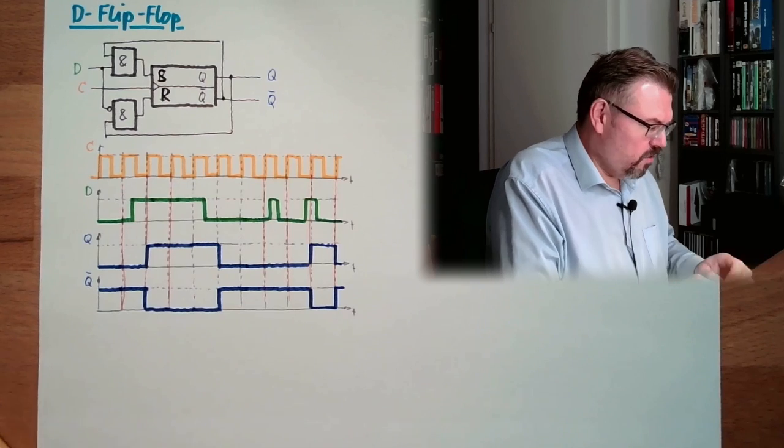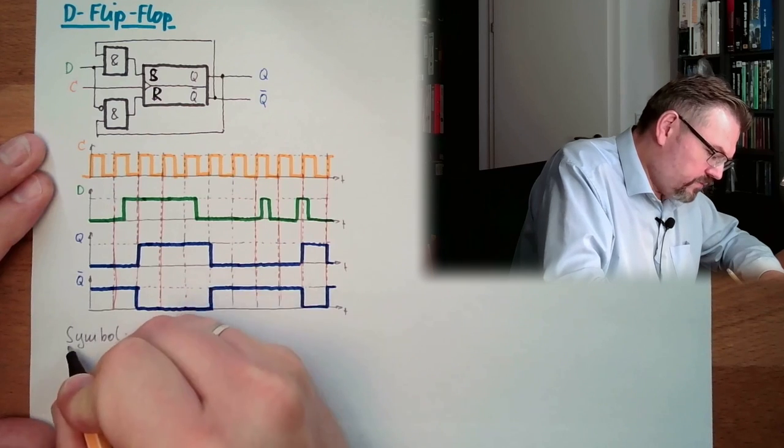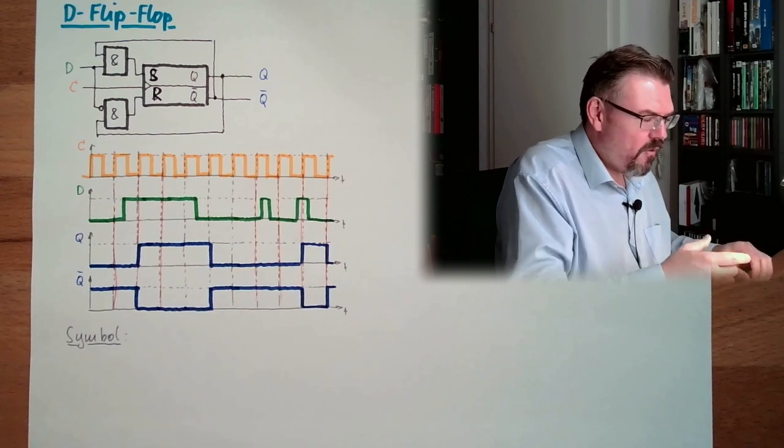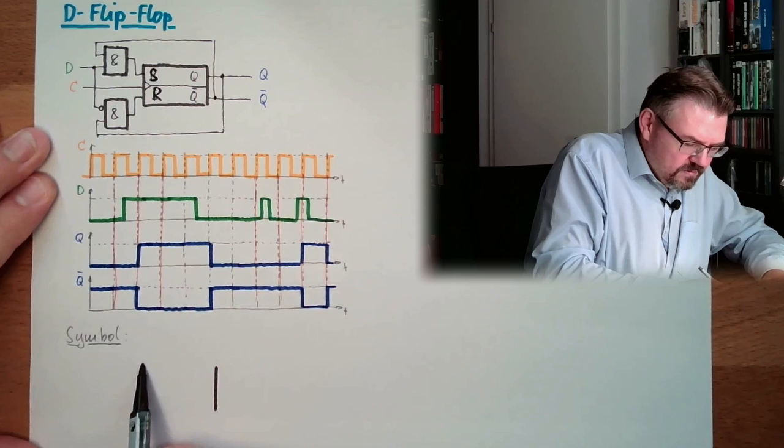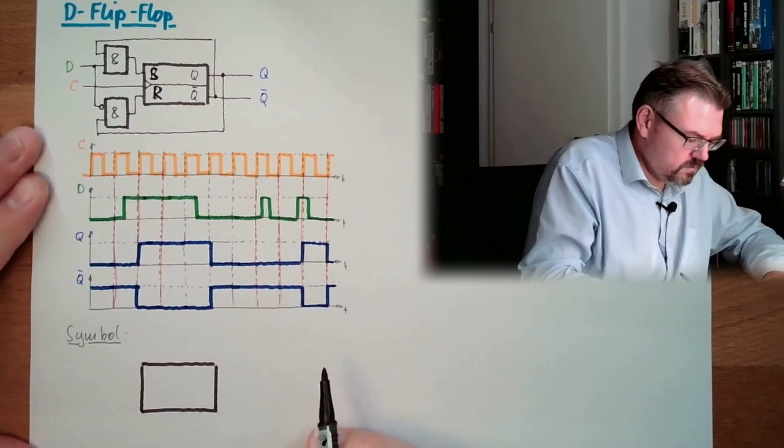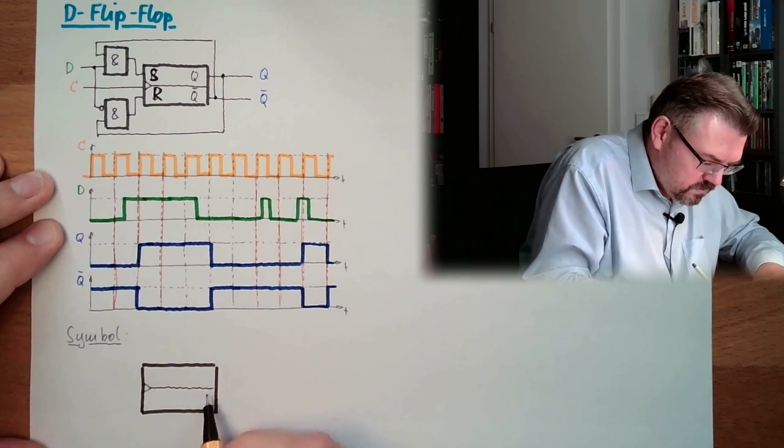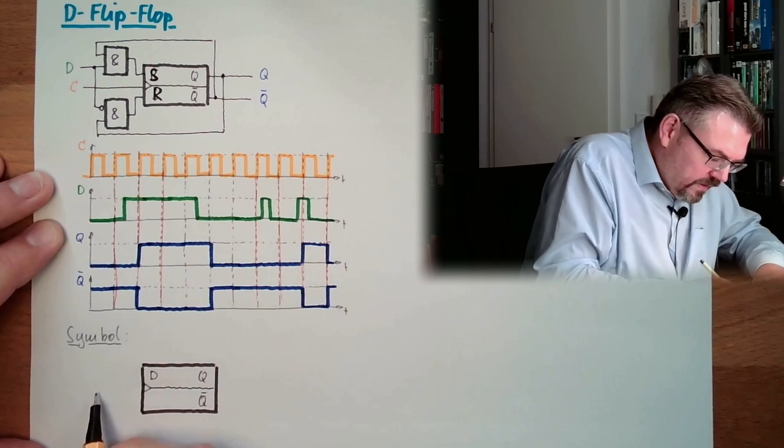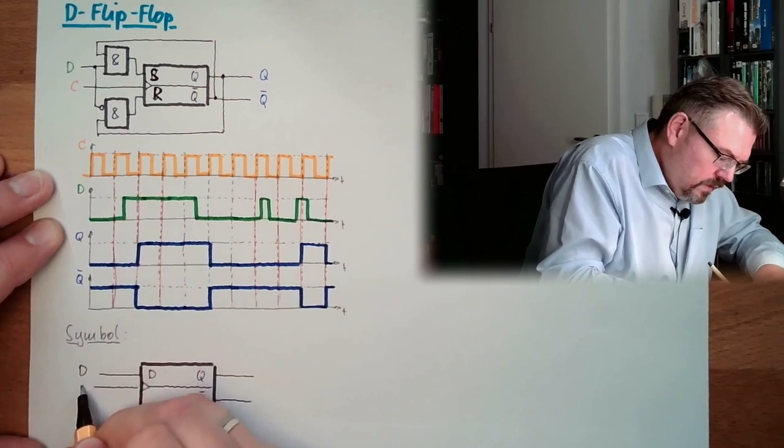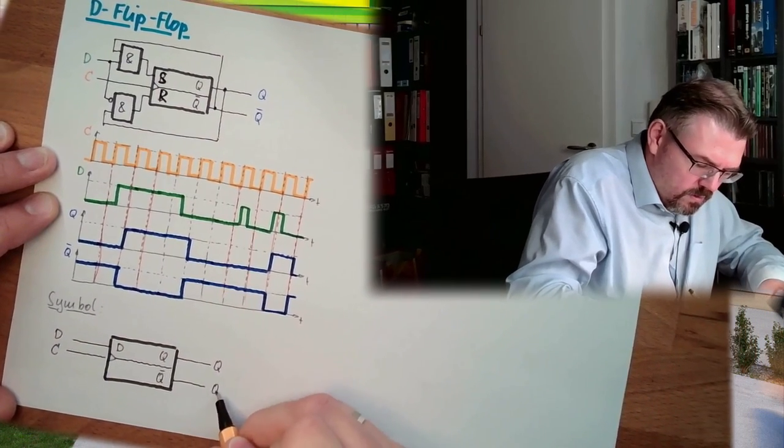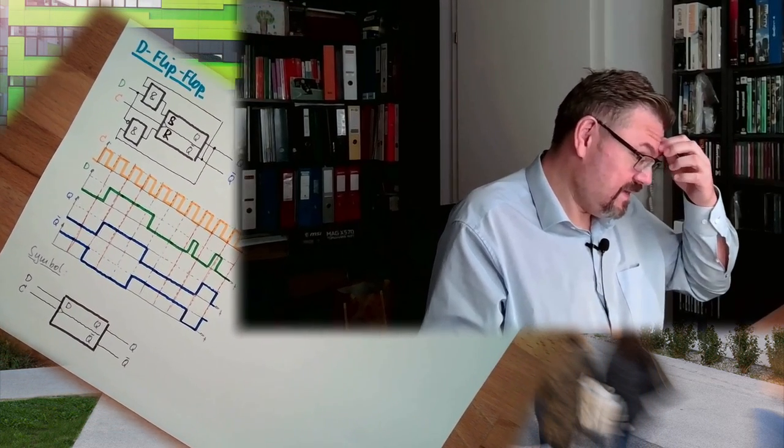Of course, we have again also a symbol. And the symbol is following the rules how every other was also produced. So we have the clock input here somewhere and the data line. D, C, Q, not Q. That's how it looks like, the flip-flop.